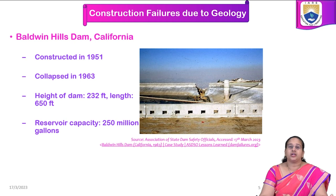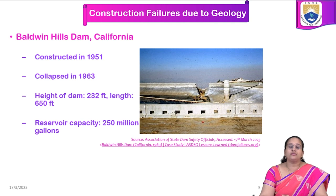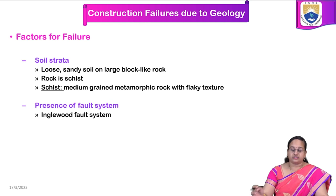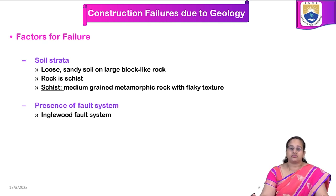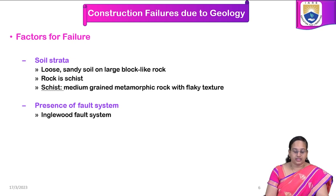Coming to another case study: the Baldwin Hills Dam in California. This was constructed in 1951 but collapsed in 1963. It has a height of 232 feet, a length of 650 feet, and carried 250 million gallons of water. This is an earthen dam constructed to hold that water. At this location, there is loose sandy soil on top of a large block-like rock. This rock is schist, which is a metamorphic rock with a flaky texture, and the soil strata at the location was not studied in detail.